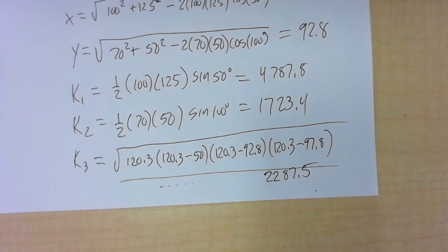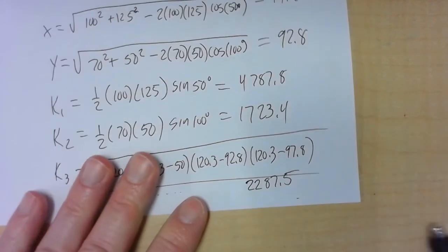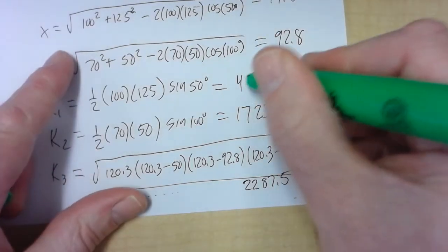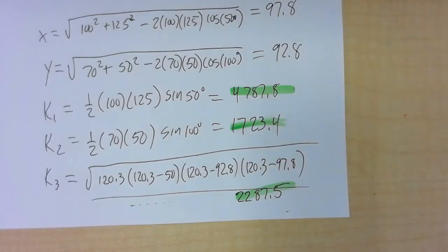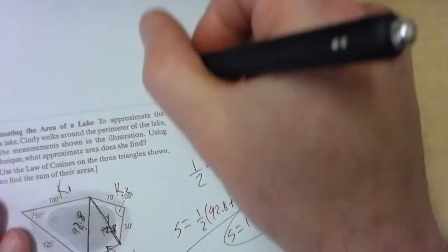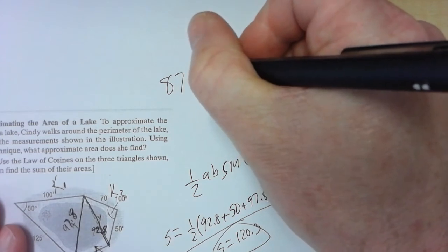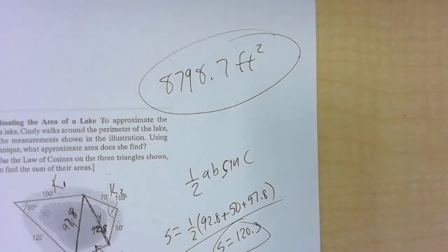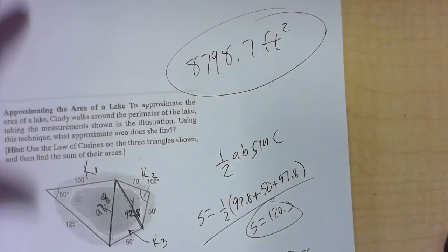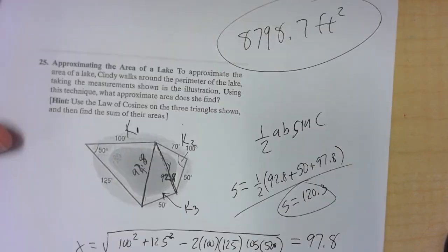Adding all three areas together — K1 plus K2 plus K3 — gives a grand total area for the lake of approximately 8,798.7 square feet. Units are obviously important here. That concludes these five problems — basically five minutes per problem on average.